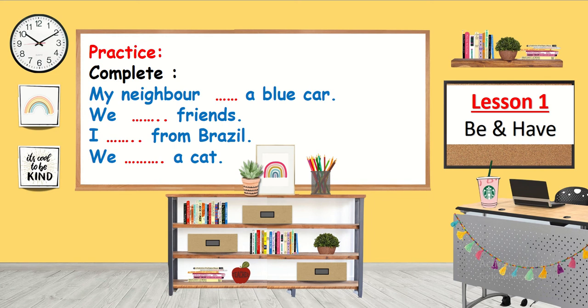Next: 'We ___ friends.' Here we can use both — we have friends and we are friends. It depends on the sentence and the context. Now: 'I ___ from Brazil.' Can we use 'have' or 'be'? I am from Brazil.